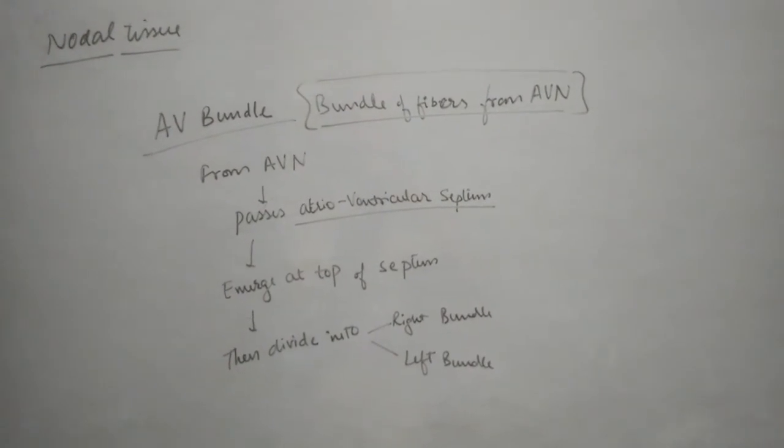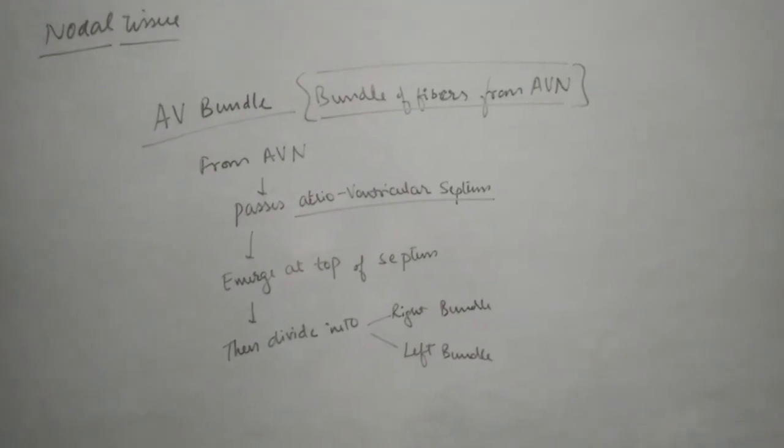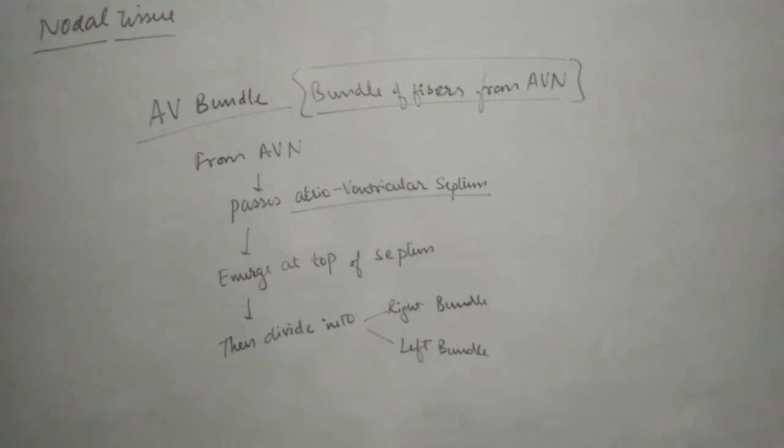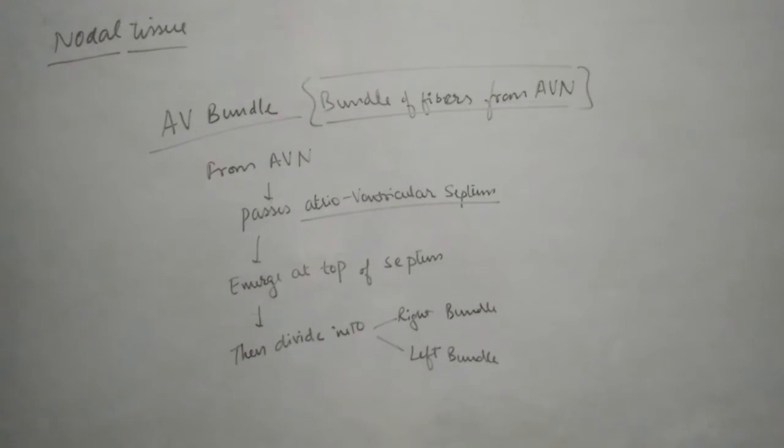After covering the entire AV septum, they emerge on the top of it and then divide into right and left sides, that is right and left bundles.